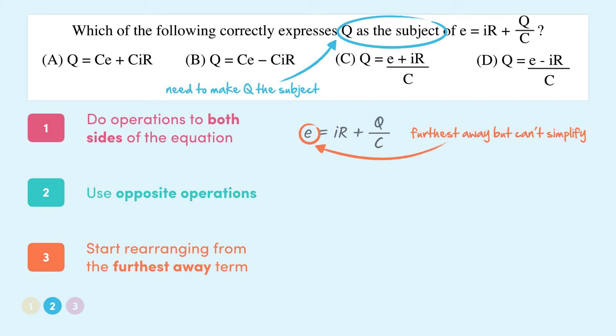The next term furthest away from Q is IR because it's also been added to the equation, just like E was. So let's minus IR from both sides, which will cancel out the plus IR on the right and we'll leave us with E minus IR on the left. Next we have to get rid of the fraction on the right hand side. This is the last thing to do since C is the closest variable to Q. Seeing as Q is divided by C, we have to multiply both sides by C to simplify the equation.